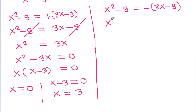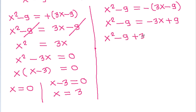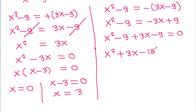For the second case, x² - 9 = -(3x - 9), which simplifies to x² + 3x - 9 - 9 = 0, giving x² + 3x - 18 = 0.